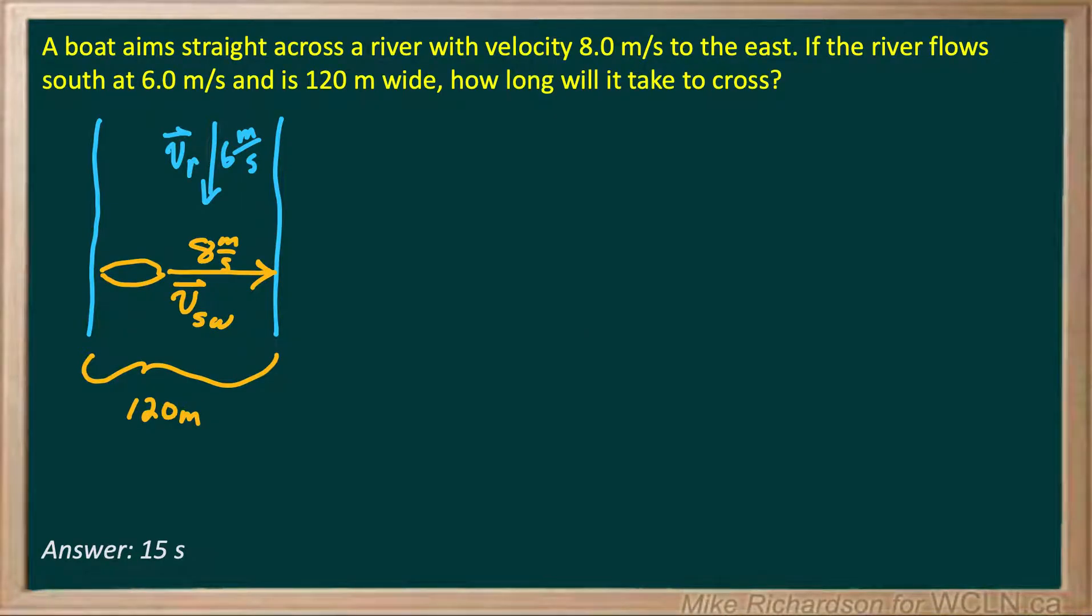Here we've got a boat aiming straight across a river which is 120 meters wide and his still water velocity is 8 meters per second. That's without the current. Whatever direction the boat points is his still water velocity. Now the river is flowing at 6 meters per second to the south, so straight down, and we want to know how long it takes for him to cross. We're trying to find time.